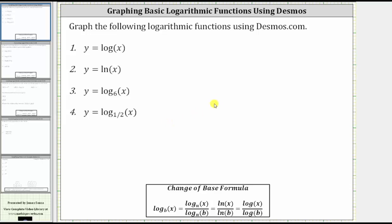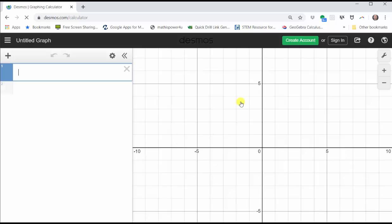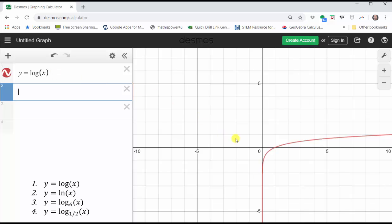Let's begin by going to Desmos.com. Once on Desmos.com, we click start graphing, and we enter the functions on the left. Our first function is y equals common log of x. We enter y equals log, and then in parentheses x. The parentheses are optional, but I do like to include them. And then enter, and the graph appears on the right.